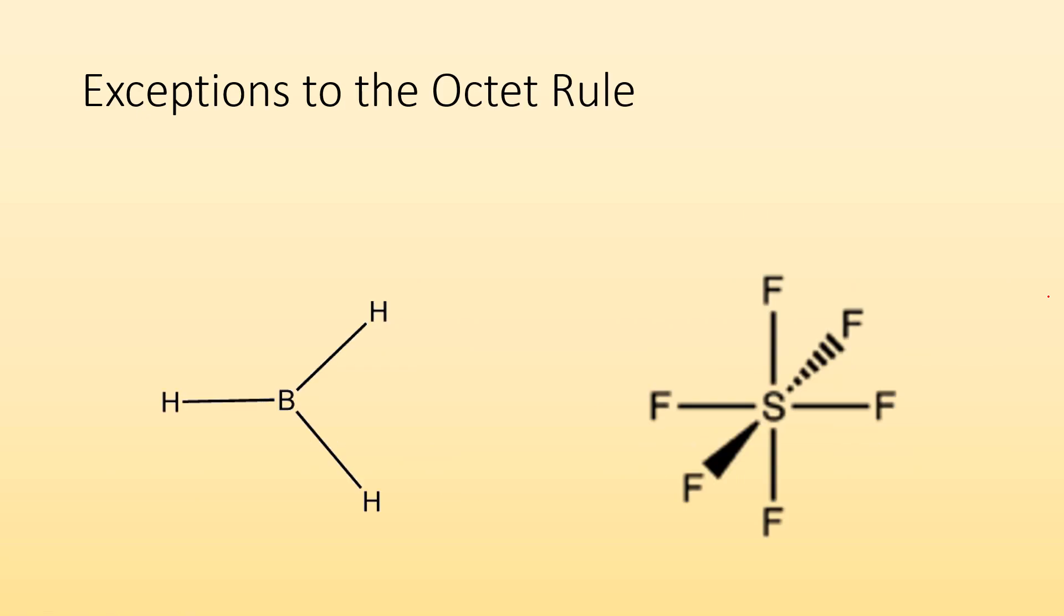Exceptions, of course, right? What's chemistry without these rules that have a million exceptions to them? Well, more on this later. Alright, we're not going to jump into it too much right now. Just know that they exist. There are exceptions. Here's a couple of images like here. Boron only has six valence electrons from the bonds. Sulfur here has got more. Know that they exist. Don't panic too much about them yet.